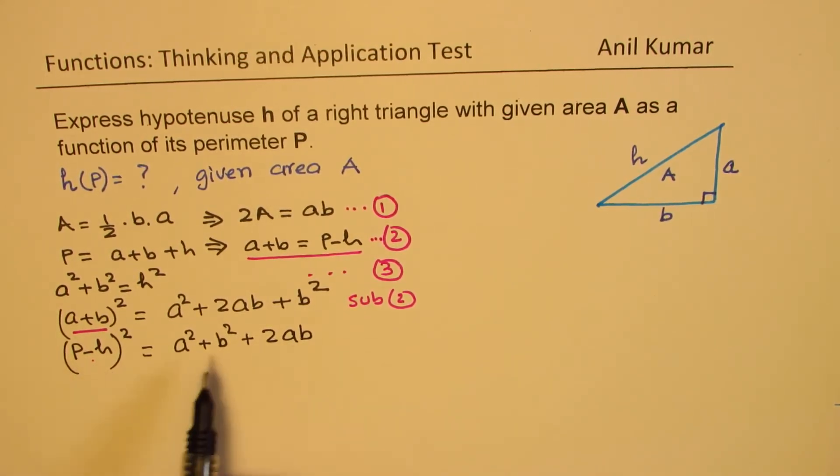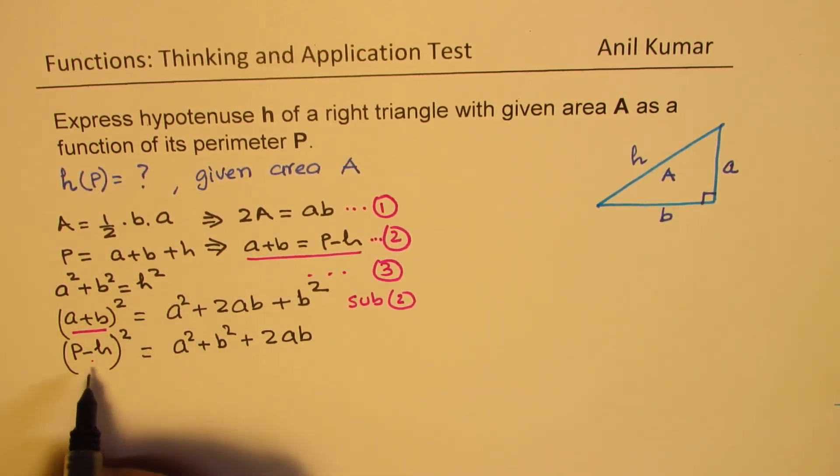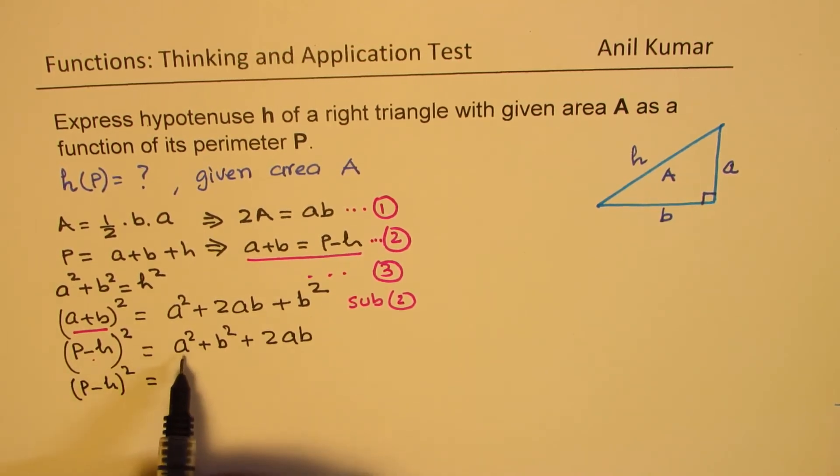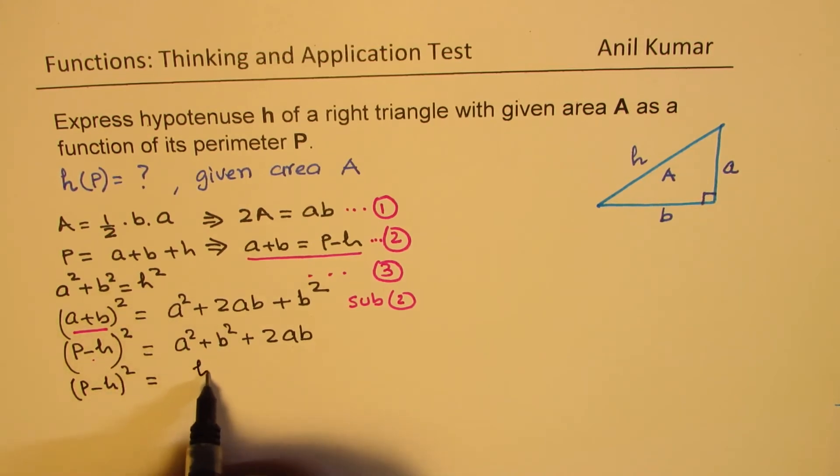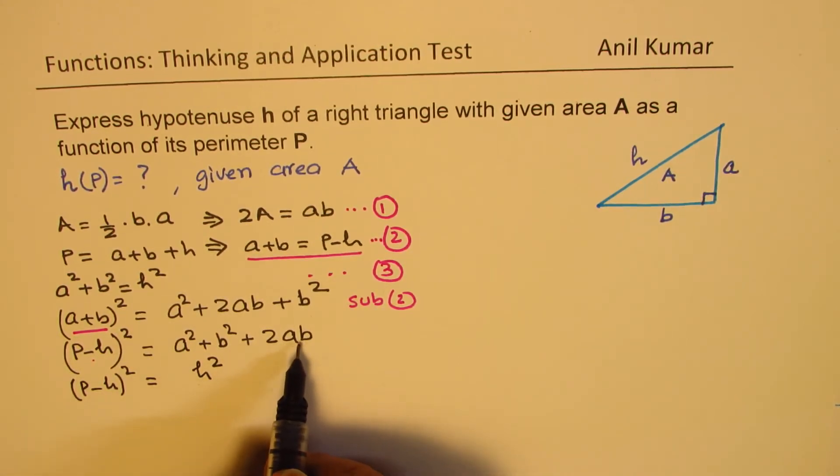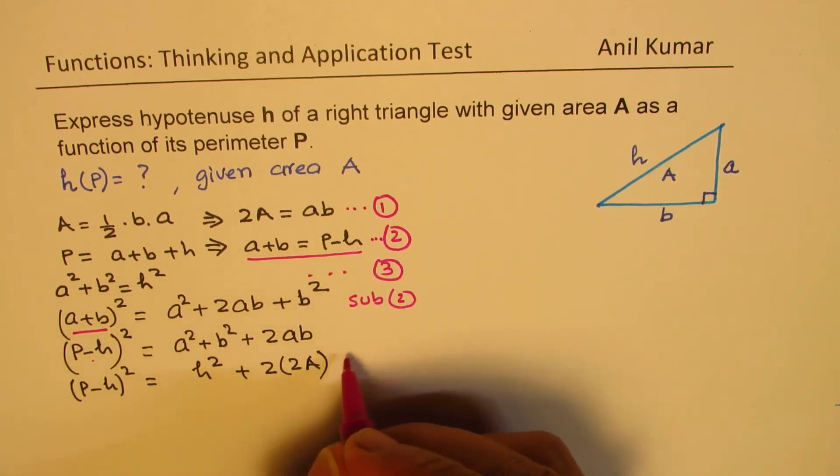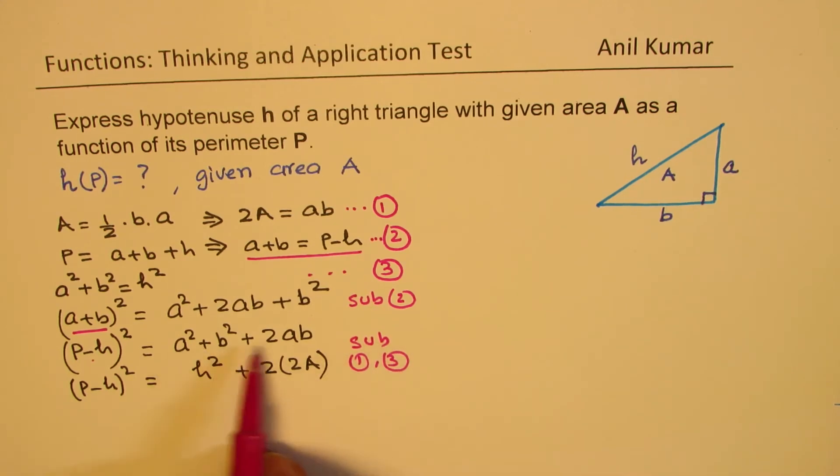So we have P and h. Now we have to get rid of a's and b's. A squared plus b squared is h squared. So we could write this as (P minus h) whole square equals a squared plus b squared which is h squared, and ab is twice A. So it is plus 2 times twice A. So we substituted equation 1 and equation 3 and get rid of a's and b's.